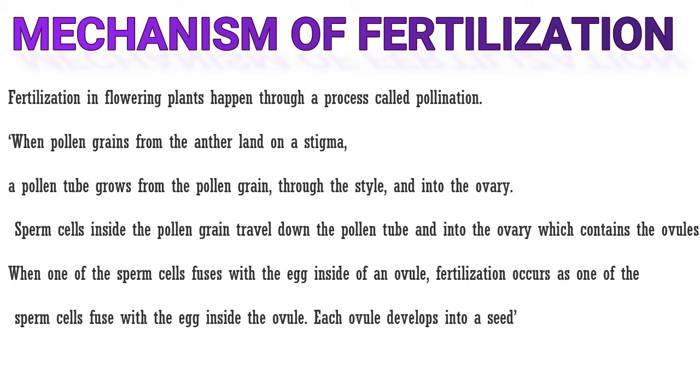Sperm cells inside the pollen grain travel down the pollen tube and into the ovary, which contains the ovules. When one of the sperm cells fuses with the egg inside of an ovule, fertilization occurs. As one of the sperm cells fuses with the egg inside the ovule, each ovule develops into a seed.